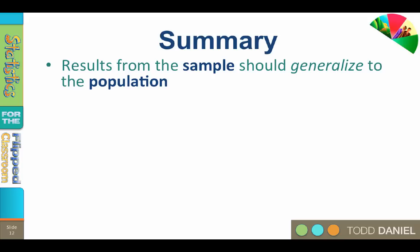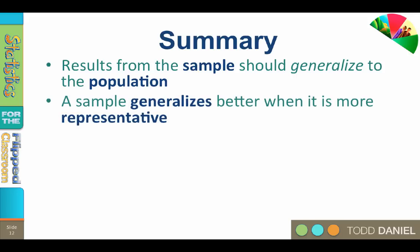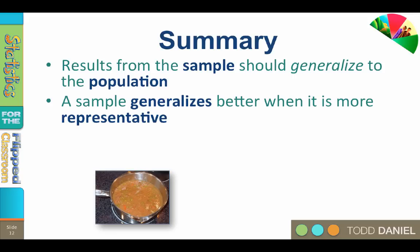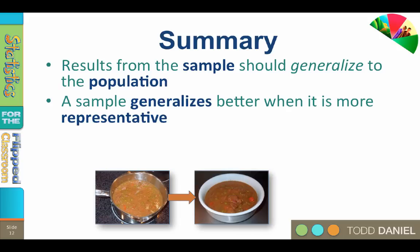Let's summarize what we've learned about populations and samples. Results from the sample should generalize to the population — that is, what is true about the sample should apply in general to the population. A sample generalizes better when the sample is more representative of the population. For example, consider cooking stew: you want to know if the stew is ready to serve. Are the carrots fully cooked? Does it need more salt? The population is the entire pot of stew. How large a sample do you need? You can tell everything you need to know from a single spoonful.